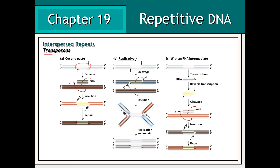Other transposons can actually make copies of themselves before being inserted at a different locus. Still others employ an RNA intermediate, whereby the RNA is reverse transcribed into DNA, which is then inserted at a locus elsewhere in the genome. The actions of transposons can actually interfere with gene expression.